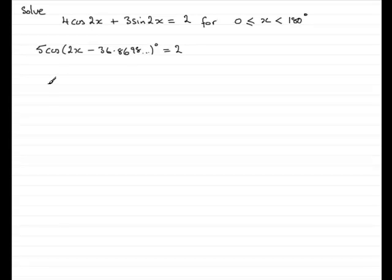Right, the next step is to get rid of this 5. So we divide both sides by 5 and if we do that, we get the cosine of 2x minus the 36.8698 and so on degrees equals 2 fifths, or if you do 2 divided by 5 on your calculator, you'll get 0.4.